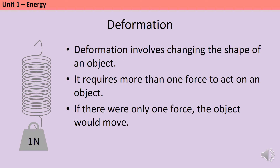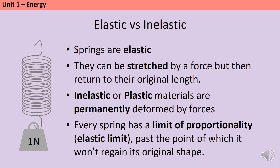When discussing elastic potential energy we start by talking about deformation, which means changing the shape of an object. In order to change an object's shape there must be more than one force acting on it — if there was just one force the object would simply move, so its shape wouldn't change. We can separate deformed objects into those that are elastic and those that are inelastic, sometimes called plastic. Springs are elastic.